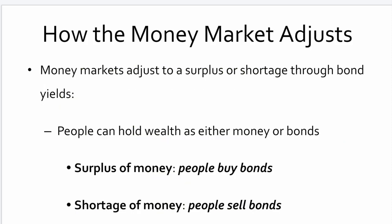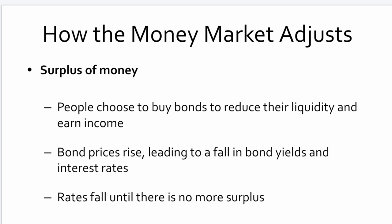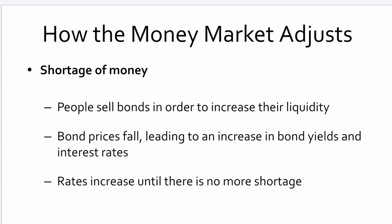In times of a surplus of money, people tend to buy bonds; in times of shortage, people tend to sell bonds. If there's a surplus of money, people buy bonds to reduce liquidity and earn income — bond prices rise, leading to a fall in bond yields and interest rates, until there's no more surplus. If there's a shortage of money, people sell bonds to increase liquidity — bond prices fall, leading to an increase in bond yields and interest rates, until there's no more shortage. So the market will naturally seek equilibrium.